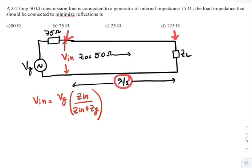On a transmission line, if you travel a distance of lambda by 2, the normalized impedance repeats itself. That means, the impedance that you are going to observe at this point is same as the impedance which is available here. Therefore, I can write this equation as VG multiplied with, instead of Zin, I will place ZL by ZL plus ZG.